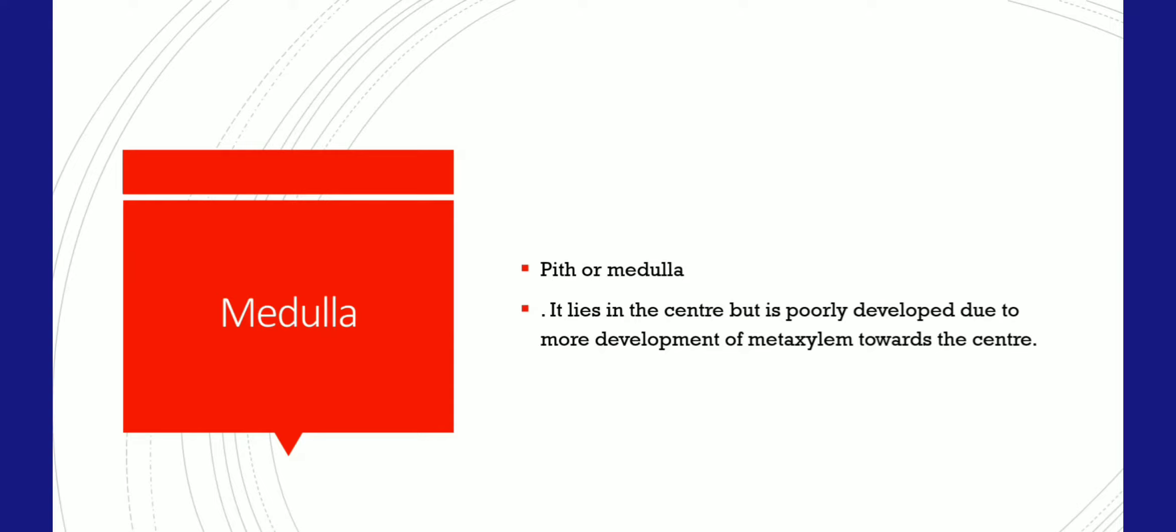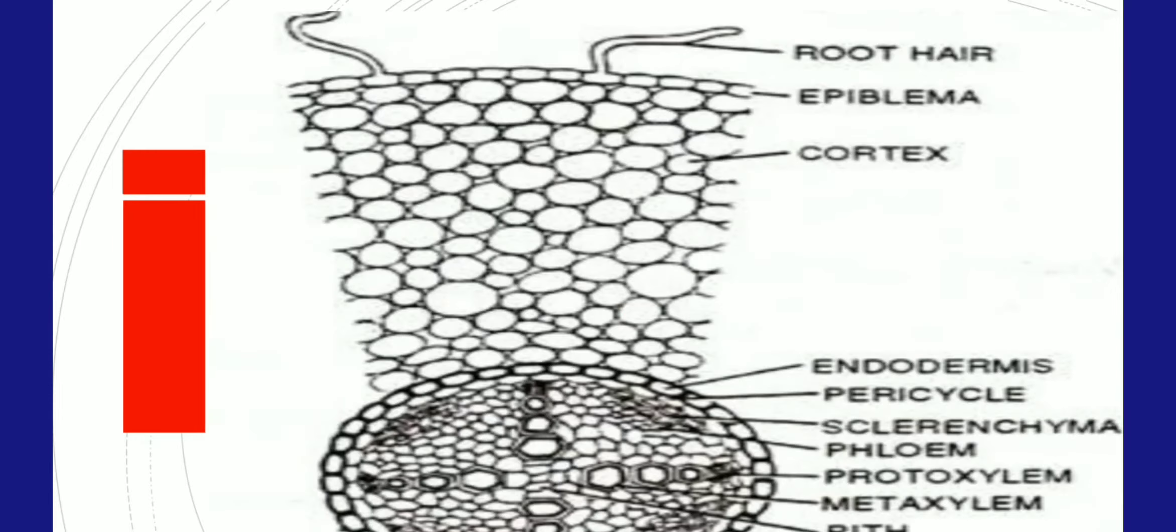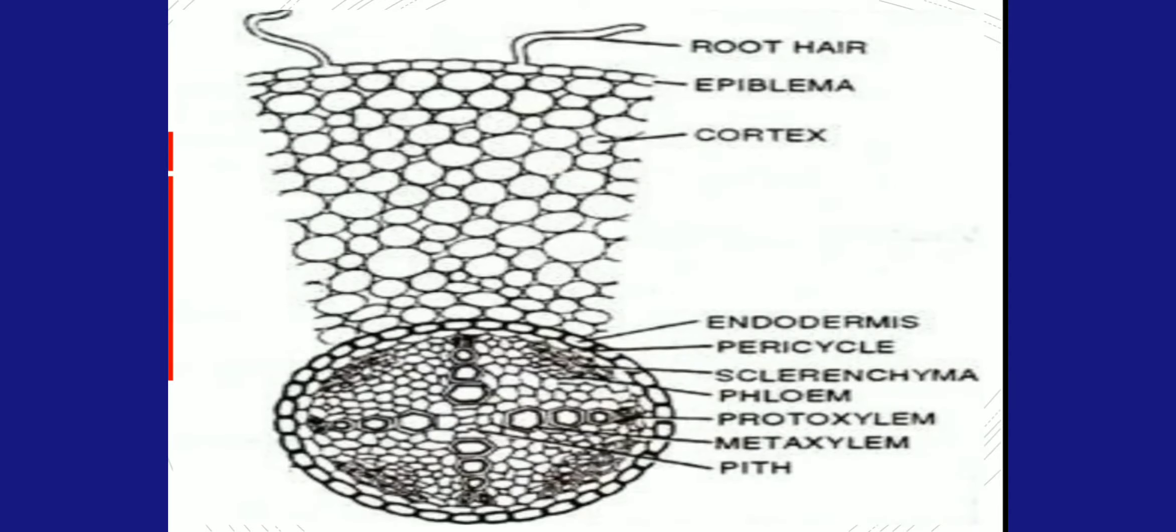In the structure of dicot root, the outermost is epiblema or epidermis with root hairs. There is no space between these cells. Next, cortex is present with circular or polygonal cells and intercellular spaces.